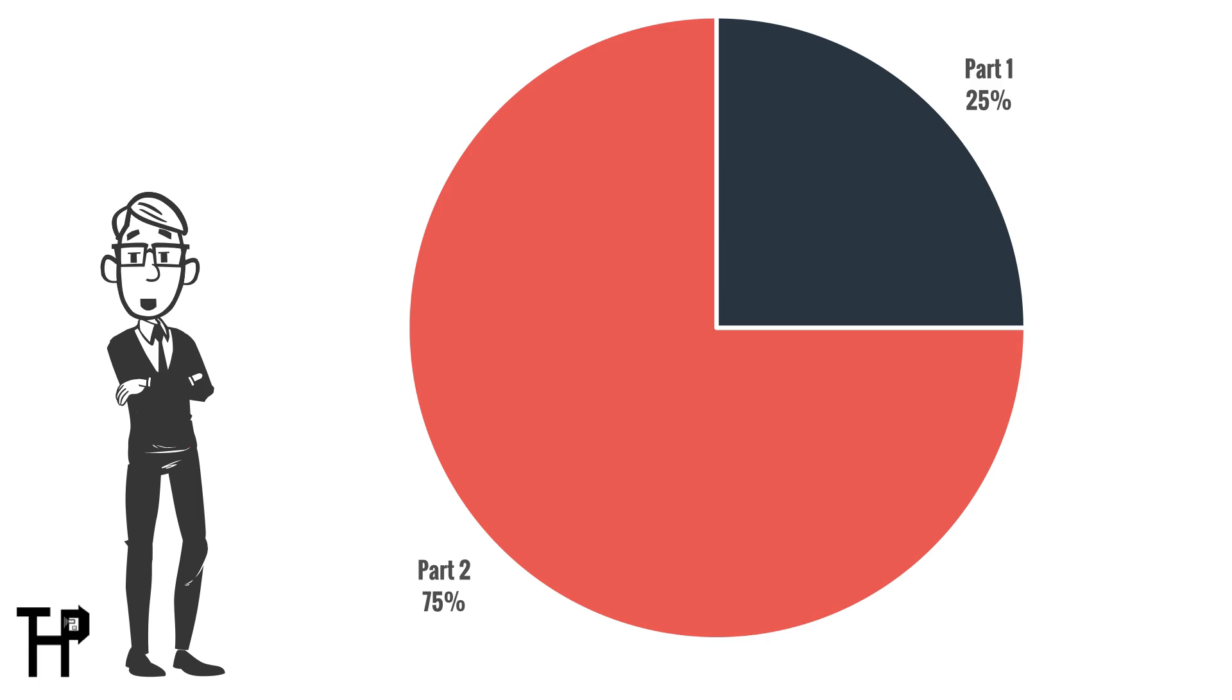Look at this pie chart. 25% of it is black and 75% of it is red. That means that one-fourth of the pie is black and three-fourths is red. Let's break it down a little bit more.